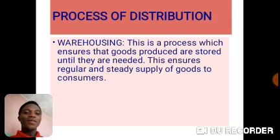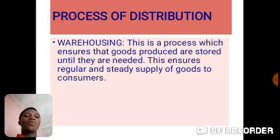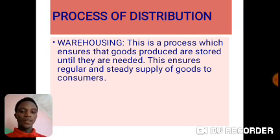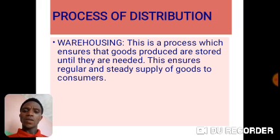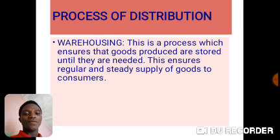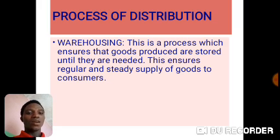Now let's look at the fourth process of distribution — warehousing. This is the process which ensures that goods produced are stored until they are needed. The actual place where goods are stored is known as a warehouse, and every activity involved in storing those goods is known as warehousing. The major aim is to ensure goods are provided in good quality and quantity to all consumers in steady supply.